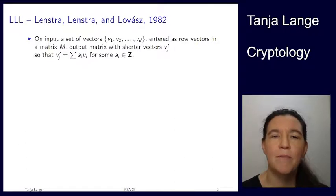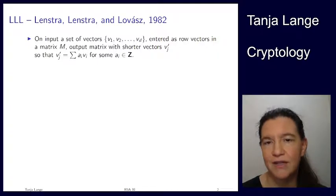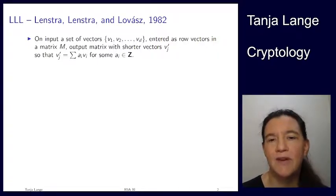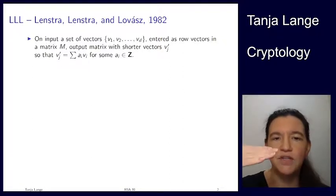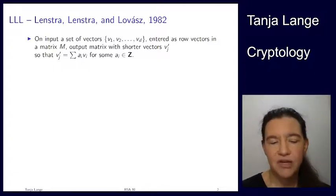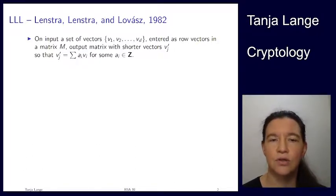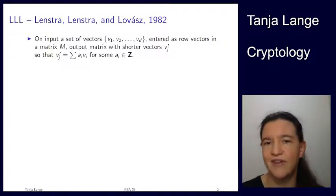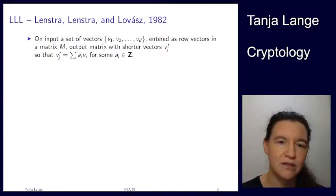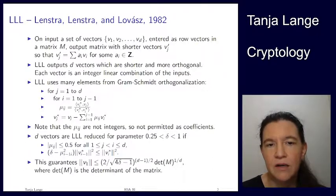LLL outputs a matrix B with shorter vectors, where we take the first vector and build polynomial Q. Each output vector v_j' is an integer linear combination of the inputs — meaning we take the original vectors v_i with integer coefficients, such as two times one vector plus three times another, or minus four times the next, whatever integers you want.